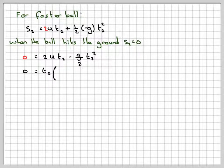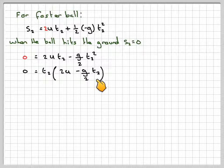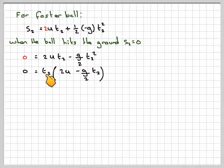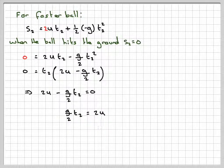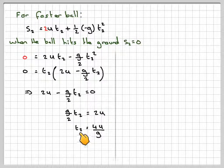Factorizing out, we're going to have t2 times 2u minus g over 2 t2. This is the initial time when it's on the ground when it starts, so t is equal to zero. This will give me the time when it hits the ground again. So 2u minus g over 2 t2 will be equal to zero. So g over 2 t2 will be equal to 2u. Therefore, t2 will be rearranging out 2 times 2, which is 4u over g.